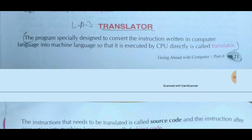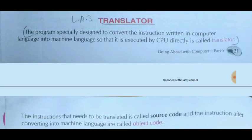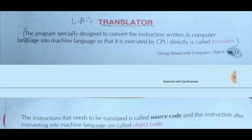A translator is used for converting one form to another form. In English, a translator converts Hindi to English or English to Hindi — you convert one language to another language. Similarly, in terms of computers, our computer understands only machine code, which is called low level language, but humans can only understand high level language. So to convert high level language to low level or low level to high level, we need some translators.